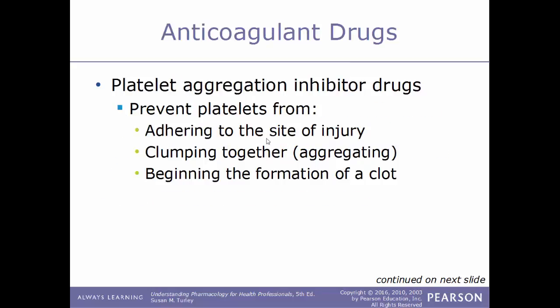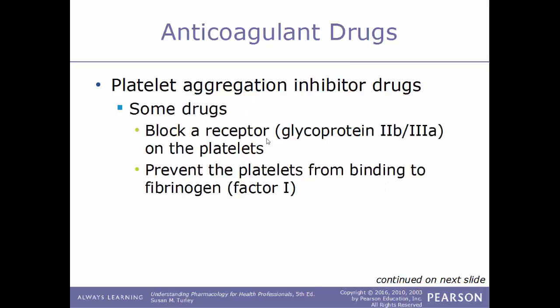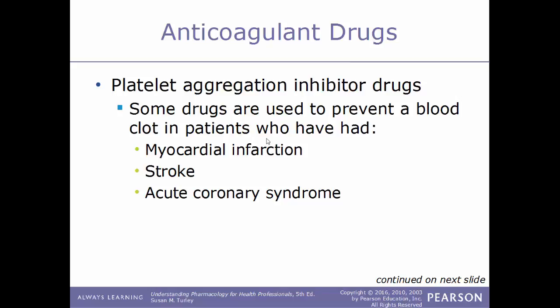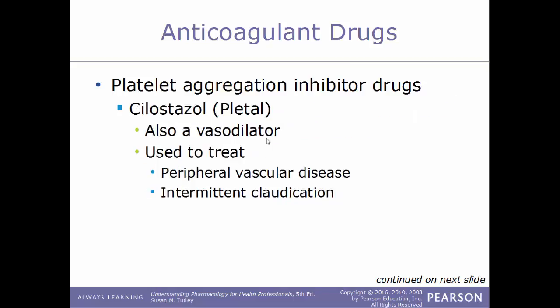Another type of anticoagulant drug is platelet aggregation inhibitor drugs. These prevent platelets from adhering to the site of injury, so they cannot clump together or form the platelet plug — the very first step in forming a clot. Some drugs block a receptor on platelets and some prevent platelets from binding to fibrinogen, which is clotting factor number 1. These drugs are used to prevent blood clots in patients undergoing angioplasty, stent placement, or cardiac valve surgery, and can also be given to patients who have had a myocardial infarction, stroke, or acute coronary syndrome.